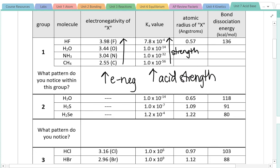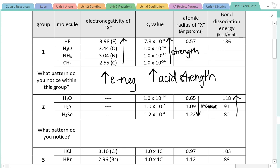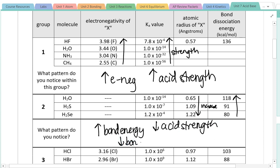Let's look at this next grouping. Here we're given atomic radius and bond energy. As the atomic radius increases, the bond energy decreases — there's an inverse relationship. So the larger the atom, the greater the bond distance and the easier that bond is to break. The strongest acid is at the bottom, correlating to the largest radius and therefore the weakest bond energy. As you increase the bond energy, you decrease acid strength.